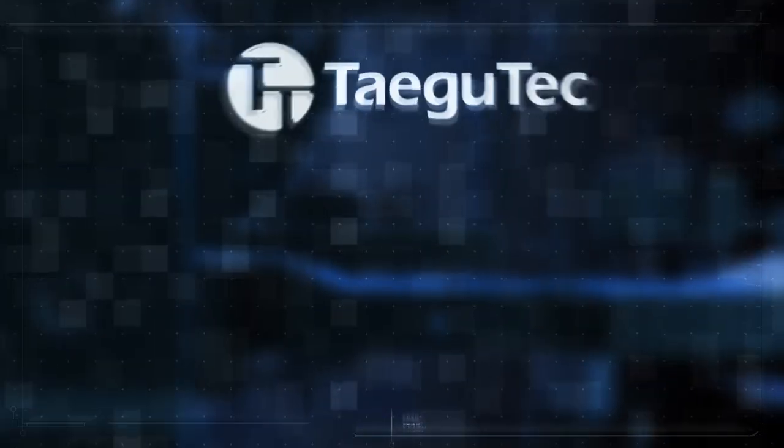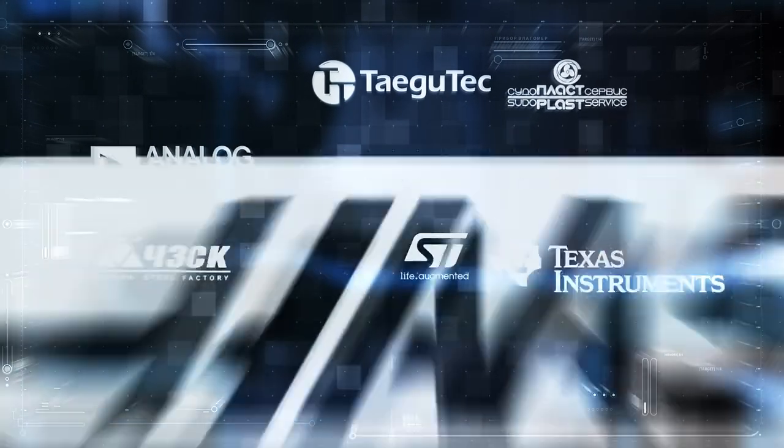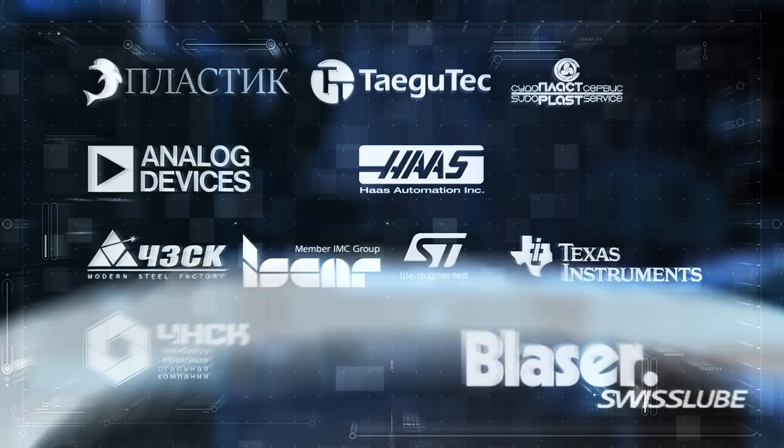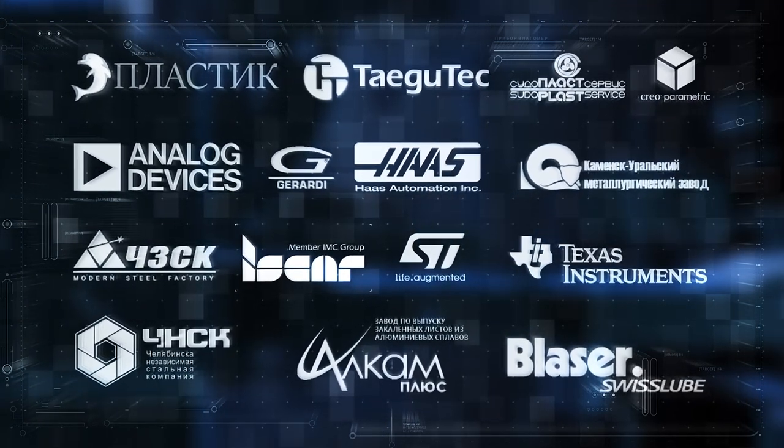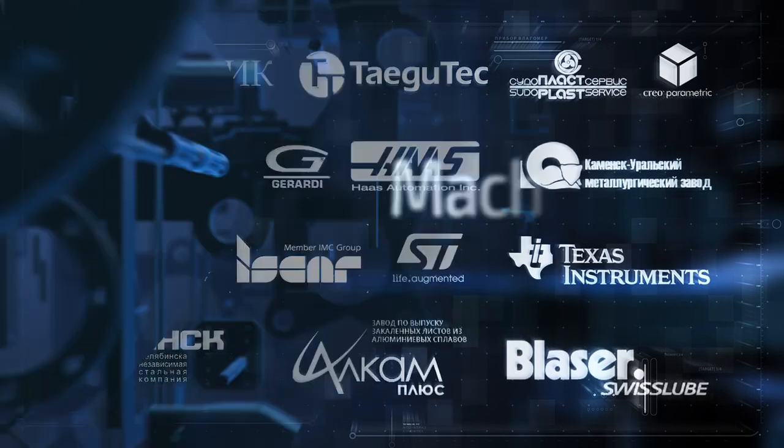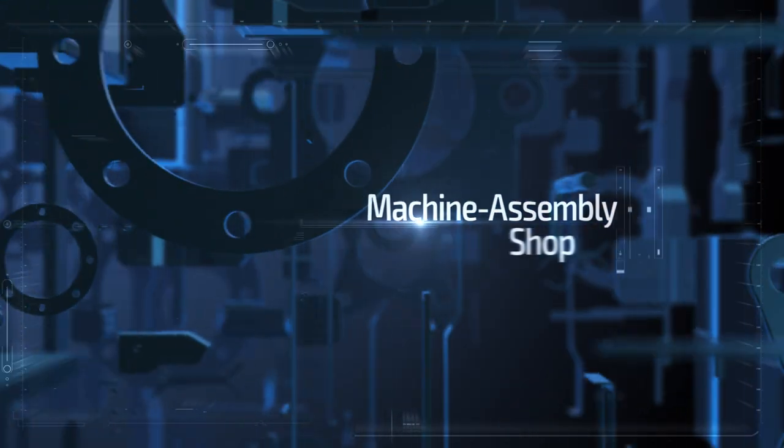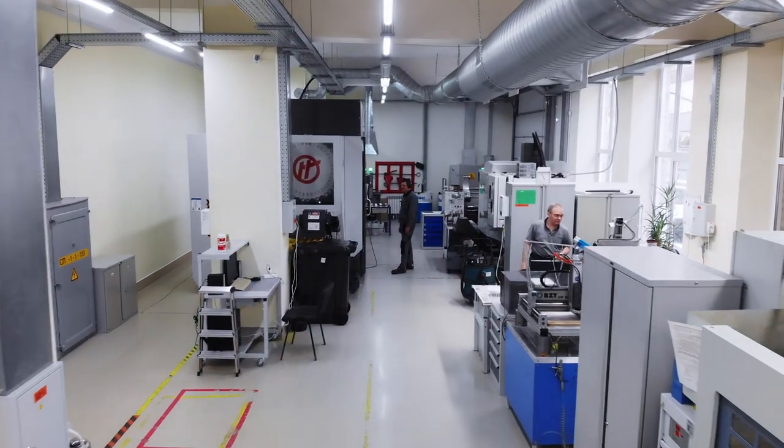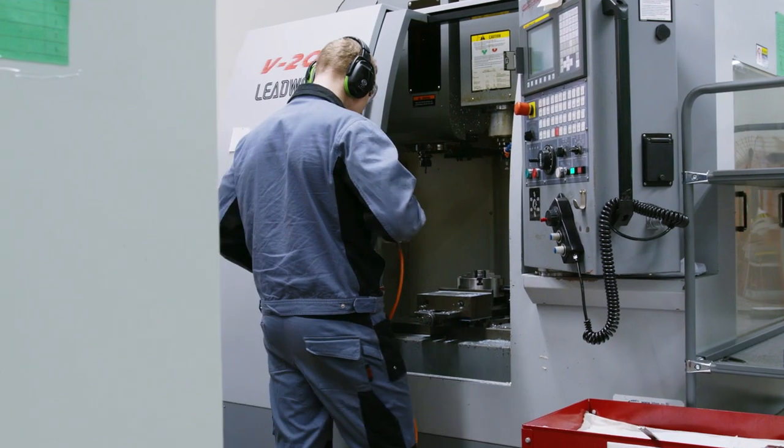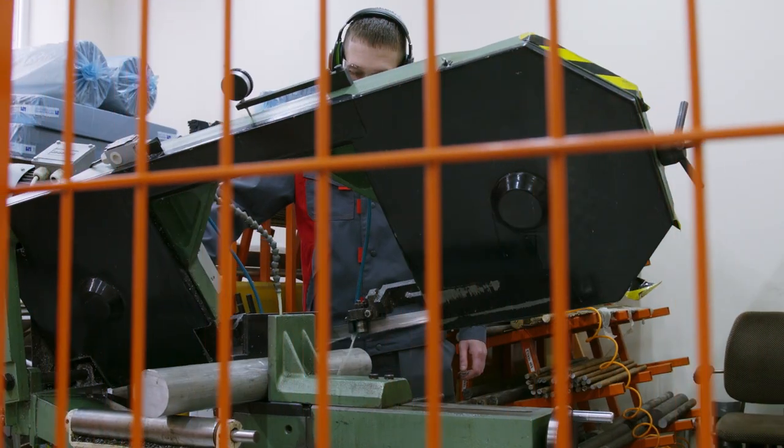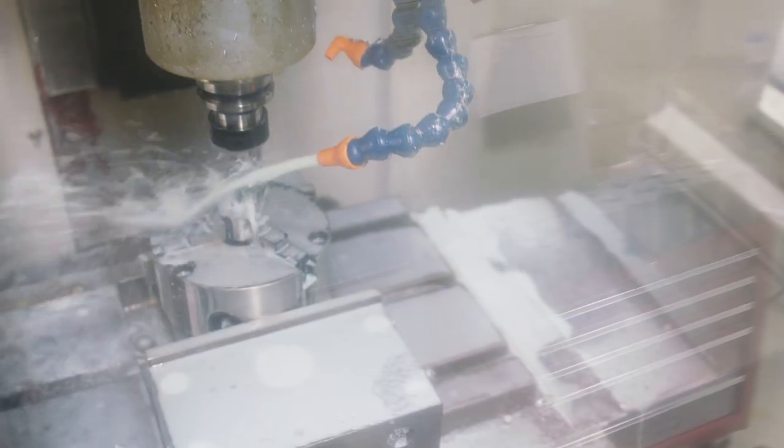To manufacture all devices, the company uses materials and components only from approved and reliable suppliers who confirm the delivery quality with appropriate declarations and certificates. The machine assembly shop is one of the structural divisions of the company. Here, we apply closed-loop production technologies that involve preparation, processing, and assembly stages.